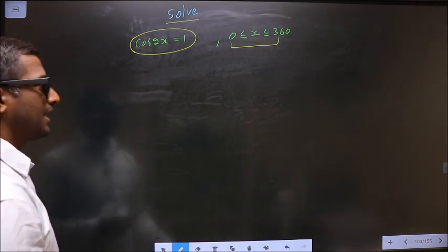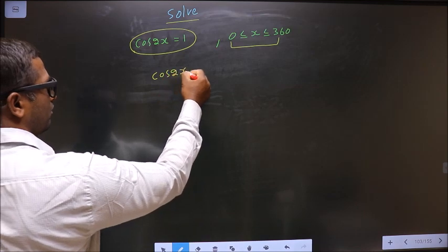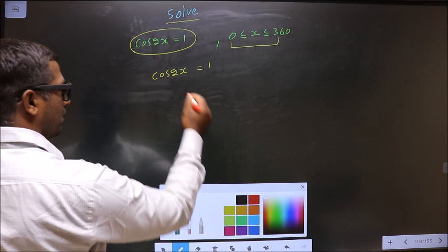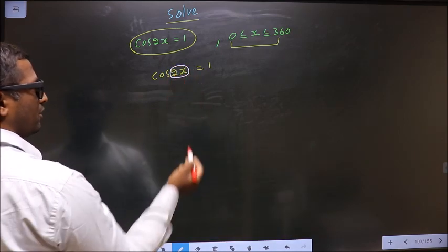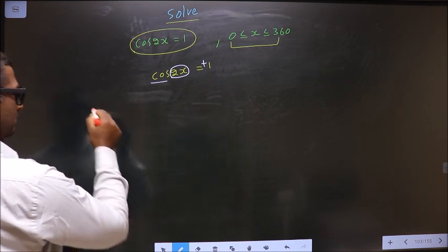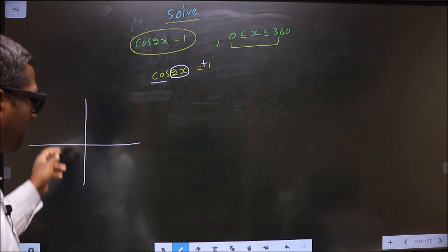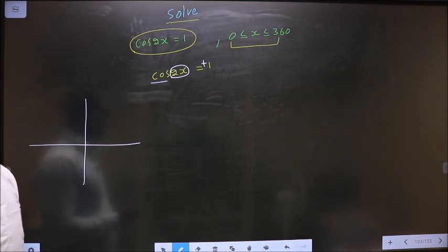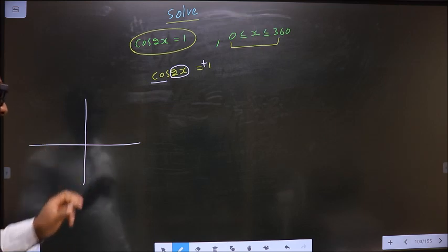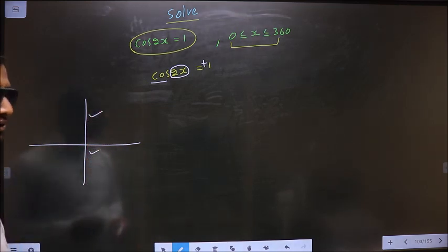First, the given equation is cos 2x equal to 1. So here to get the values for 2x, you have cos and here it is positive. So now you check in what all quadrants is cos positive. It is all silver tea cups. So cos is positive in the first and in the fourth.